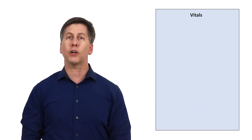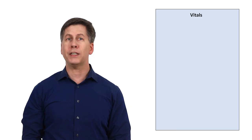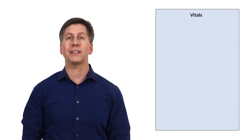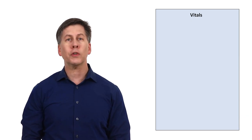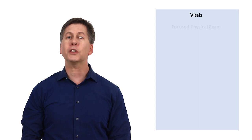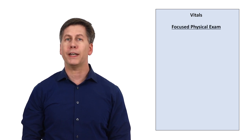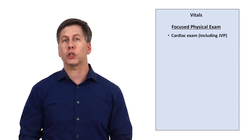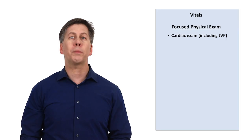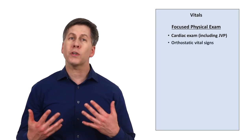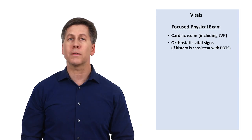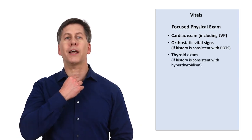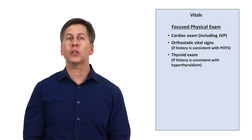A patient's vitals are always relevant to some extent, though with palpitations, unless the patient currently has an arrhythmia at that exact moment, vitals will usually be normal. If an arrhythmia is not currently present, in the absence of heart failure, the physical exam in a patient presenting with palpitations is usually unremarkable. However, a cardiac exam might reveal a murmur of mitral regurgitation, which could predispose the patient to atrial fibrillation. Check orthostatic vital signs if the history is consistent with POTS, and consider a thyroid exam looking for enlargement, tenderness, or nodules that could be associated with a cause of hyperthyroidism.